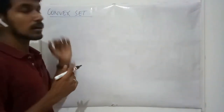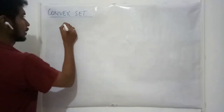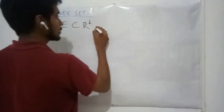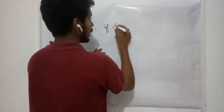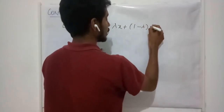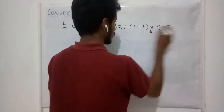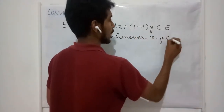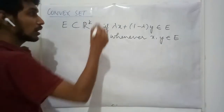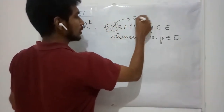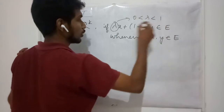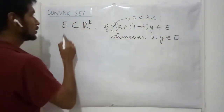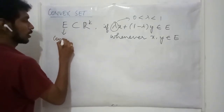Now, we are going to define something called a convex set. A subset E of Rk is said to be convex if lambda x plus 1 minus lambda y is a member of E whenever x and y are members of E, where lambda is a real value between 0 and 1. If this is so, then we call the set E to be a convex set.